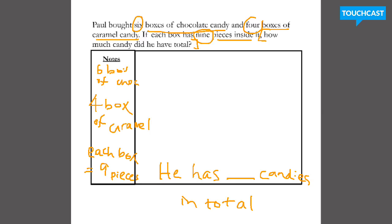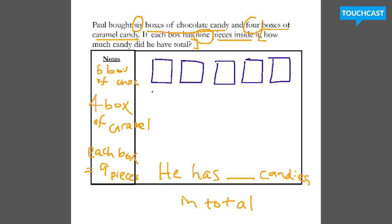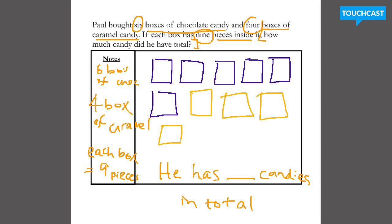Pause this video now and solve — how many candies does he have in total? All right, we are back. So once again I'm going to be visualizing what this problem is telling me. I have six boxes of chocolate candy — I'm going to do that in purple: one, two, three, four, five, six. I have six boxes of chocolate and four boxes of caramel — I'll use yellow for that: one, two, three, four. So right now I have my six chocolate and four caramel — I can check off that piece of information. My last piece of information tells me that each box has nine pieces — so this box has nine, this box has nine: nine, nine, nine, nine, nine, nine, nine, nine, nine.